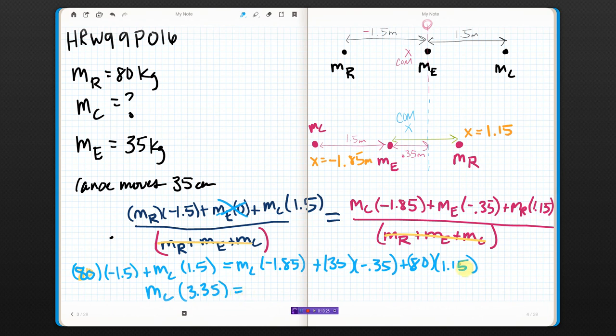I'm going to move everything else to the other side and just throw it all in my calculator. Because I'm running out of room here. So, I move this over there. And I'm going to add up all the numbers that are over here. I'm just going to stick it all in a calculator. And on the right side, what I get is 199.75. And then I divide both sides by 3.35. And I get that the mass of Carmelita is 59.6 kilograms.